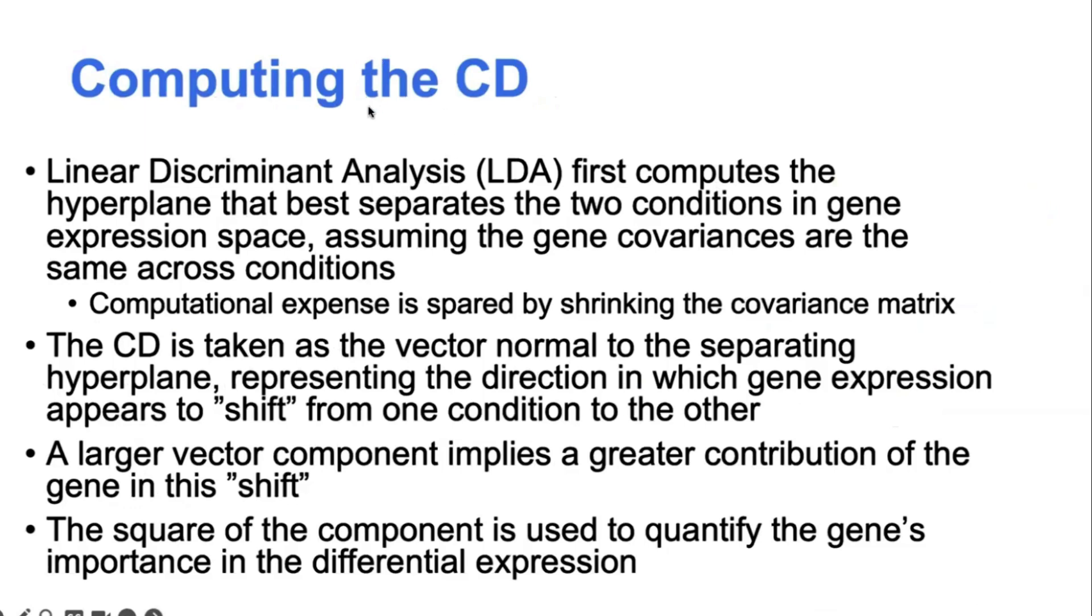The way that this characteristic direction vector gets computed is there's a regularized linear discriminant analysis that's used. And then, so this in gene expression space, when you have a lot of genes, usually this is a very computationally expensive calculation.